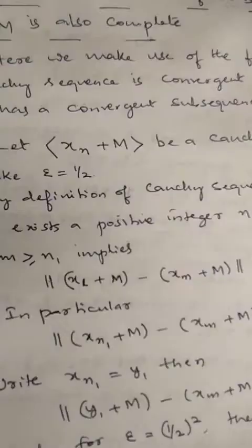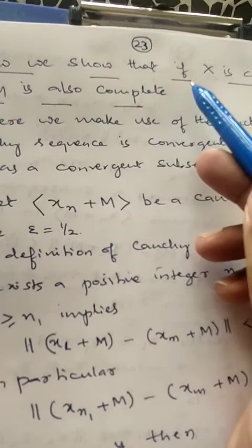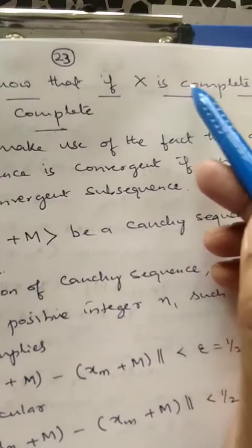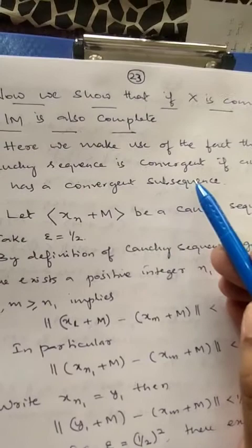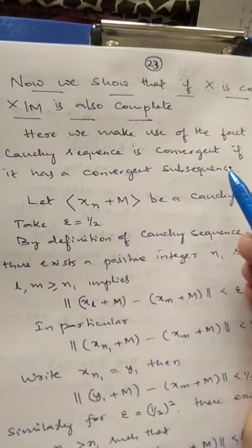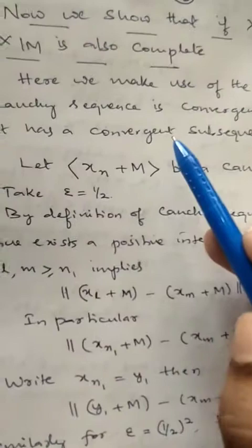Now we need to show that if X is a Banach space then X/M is also a Banach space, that is, if X is complete then X/M is also complete. To prove completeness of X/M, we use the important result that a Cauchy sequence is convergent if and only if it has a convergent subsequence. Let x_n plus M be a Cauchy sequence in X/M.